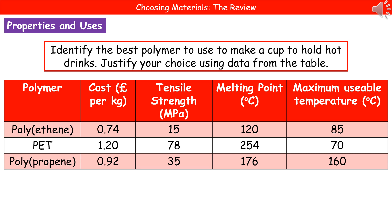Welcome to our review on choosing materials. One of the most common kinds of questions likely to come up in relation to this topic is they're going to give you a table of information about a range of different materials and ask you to identify the best material for a particular use and justify your choice. It'll be a question much like the one on the screen here: identify the best polymer to use to make a cup to hold hot drinks and justify your choice using data from the table.